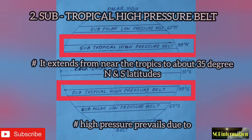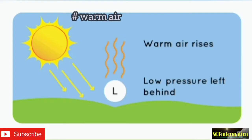Number two: subtropical high pressure belt. It extends from near the tropics to about 35 degrees north and south latitudes. High pressure prevails because the warm air of the equatorial belt gradually cools down as it rises and turns towards the north and south. Due to rotation of the earth, the air is completely turned upon reaching the Tropic of Cancer and Tropic of Capricorn and starts descending there.